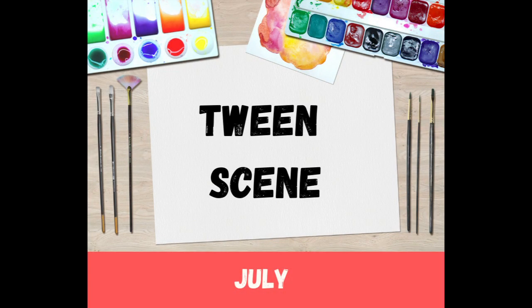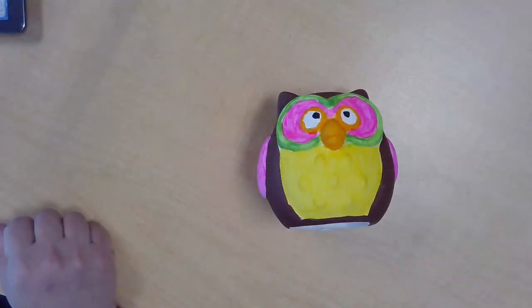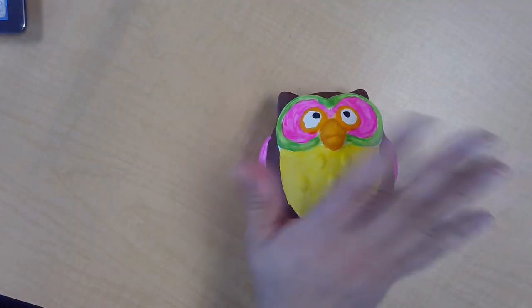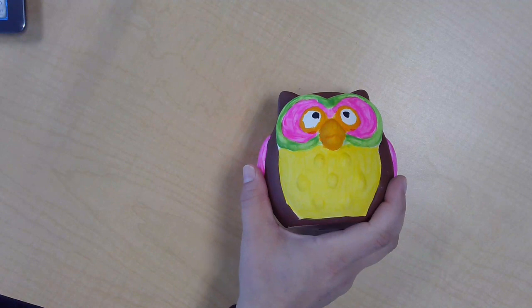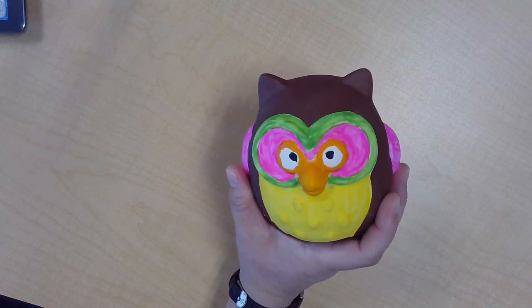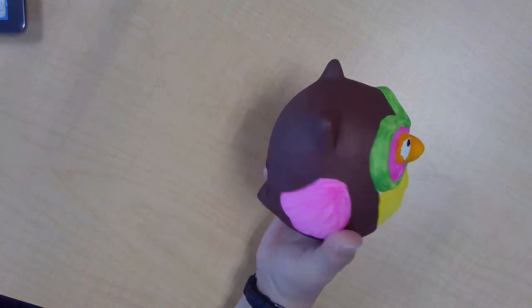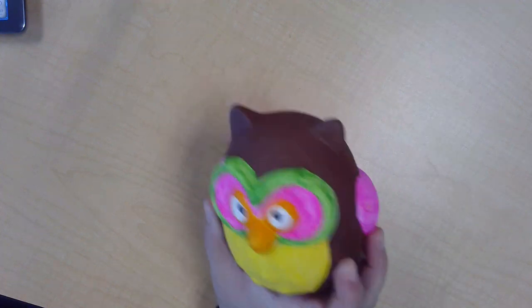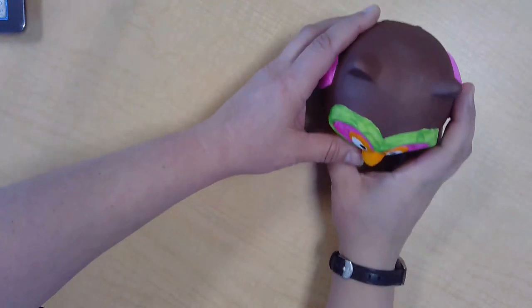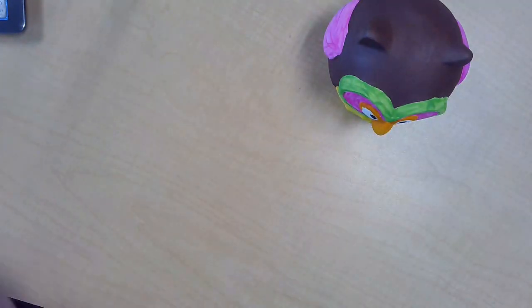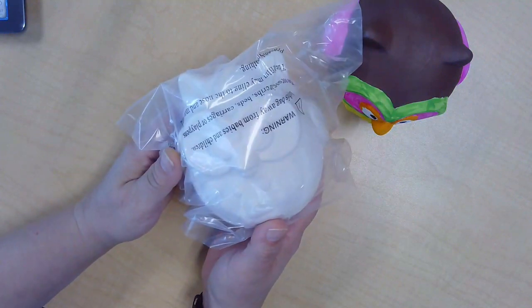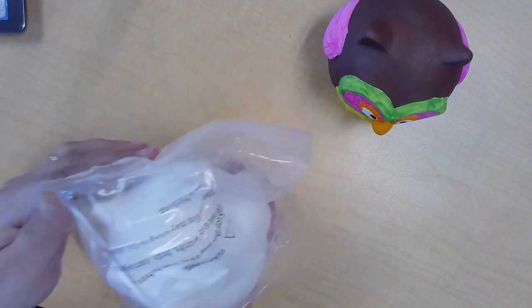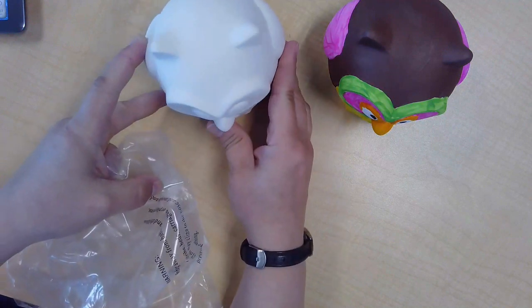Tween Scene July: Ceramic Painted Owl. Hi Tweens! Today you're going to paint your ceramic owl. You're going to find brown paint and a variety of different colors. This is a short video today because I'm not going to go through how to paint the owl, just give you some tips. In your kit you'll find a ceramic owl, unpainted of course.